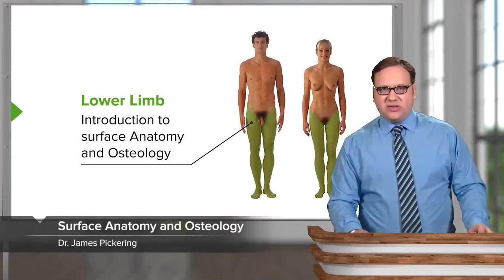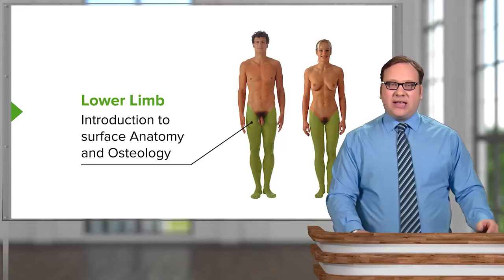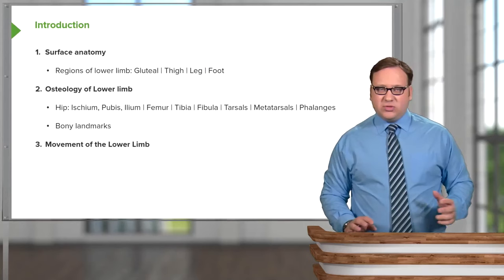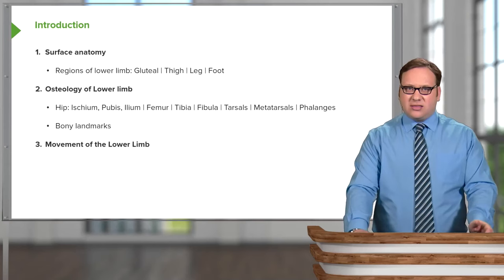In this lecture, we're going to look at the surface anatomy and osteology of the lower limb, which will set you up for the remaining lectures in this part of the course covering lower limb anatomy. We're going to first start with the surface anatomy, look at the various regions of the lower limb: the gluteal, thigh, leg, and foot.